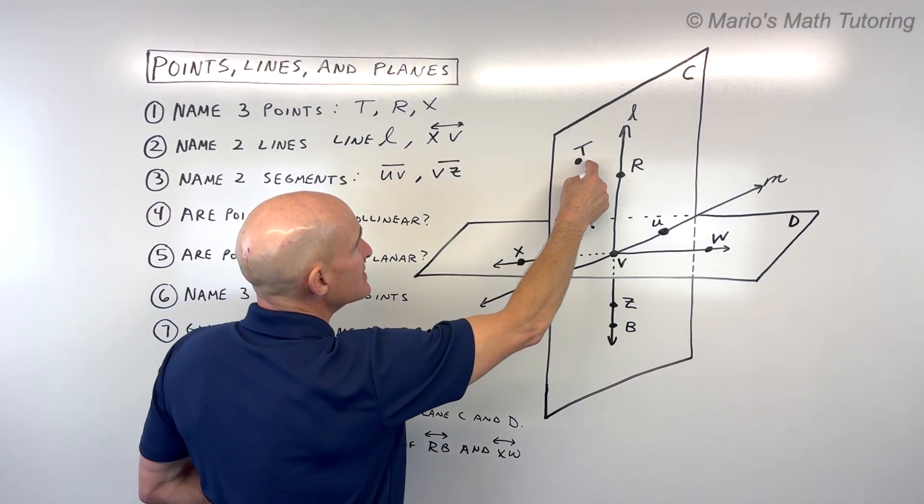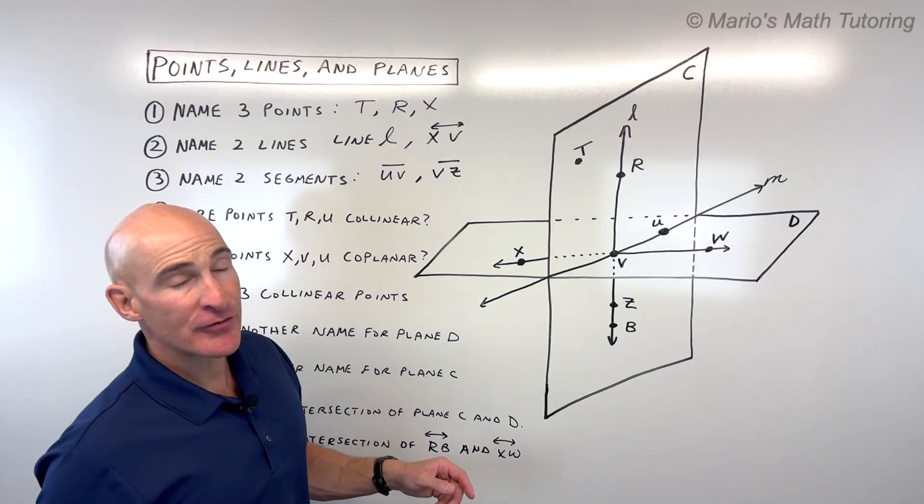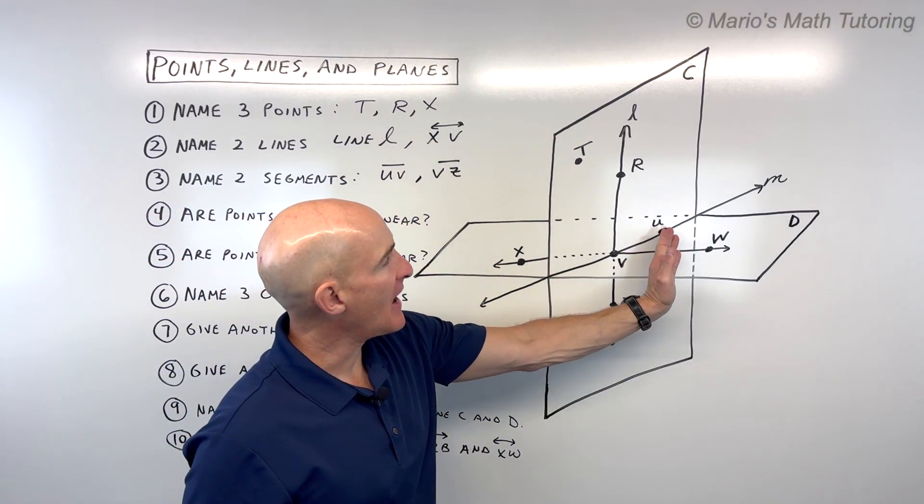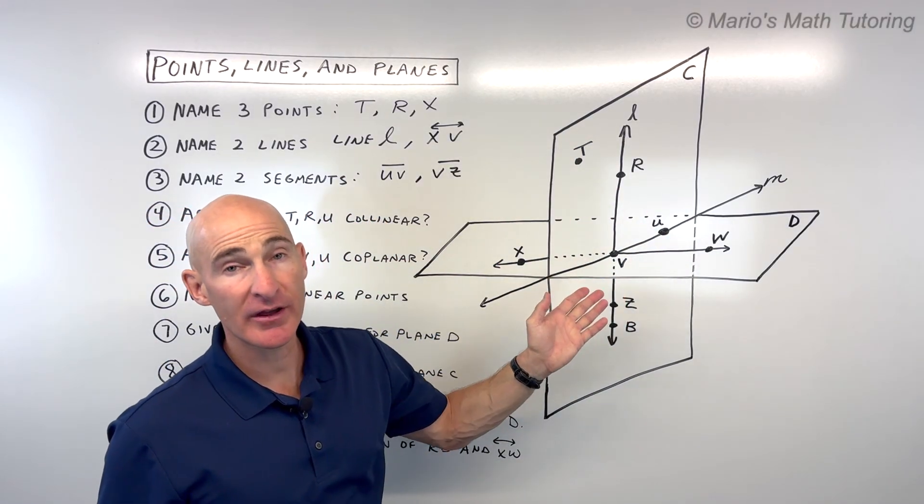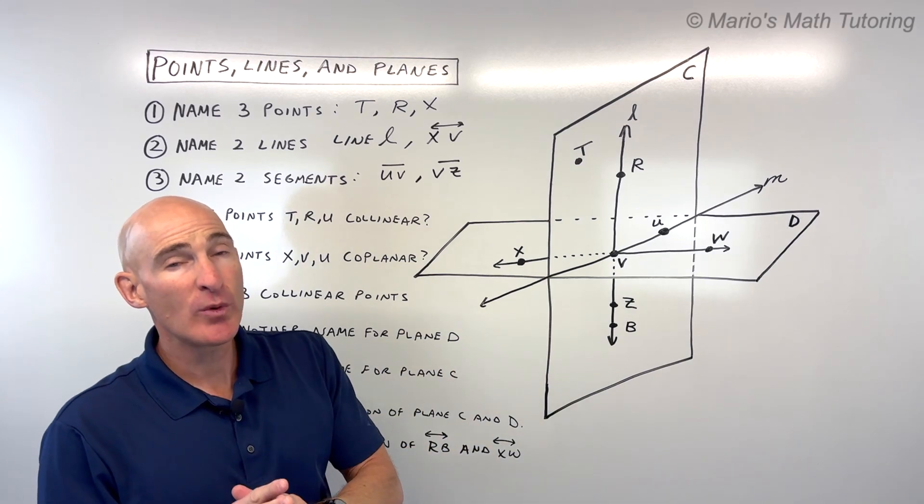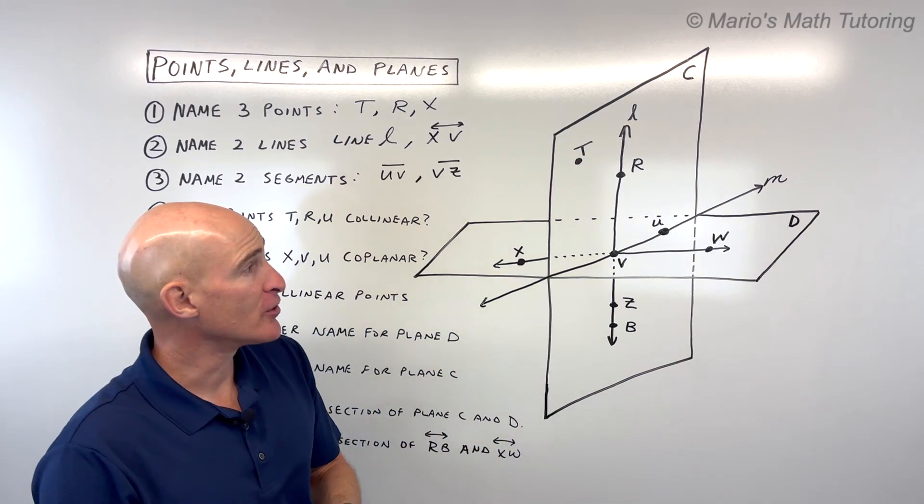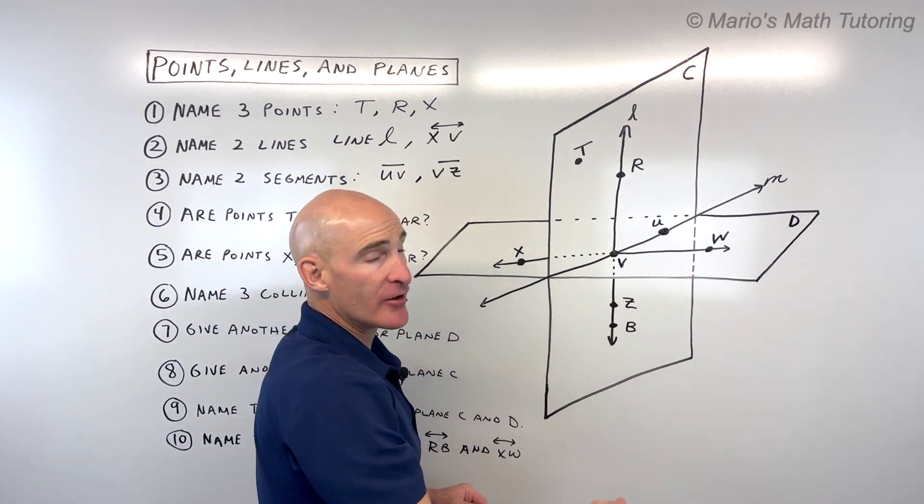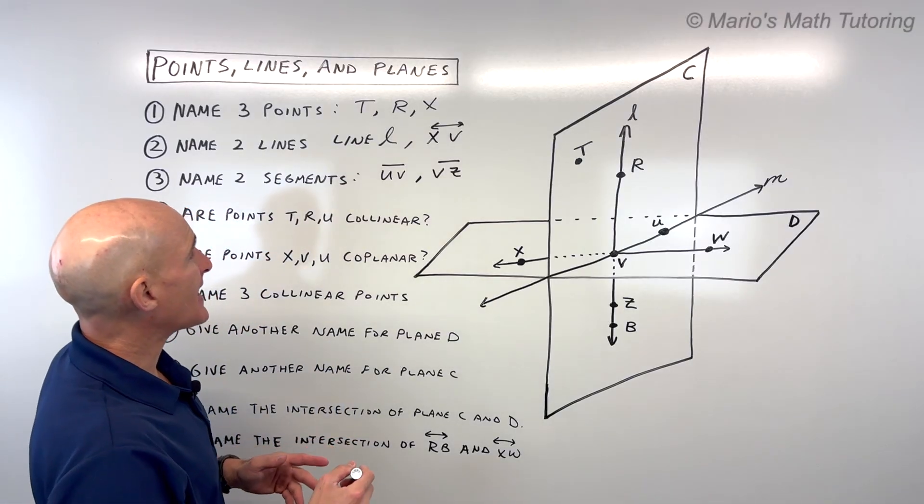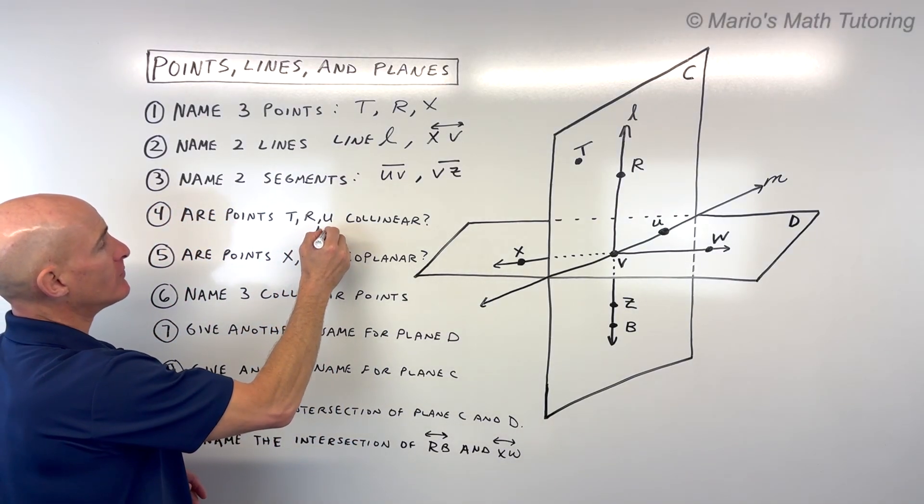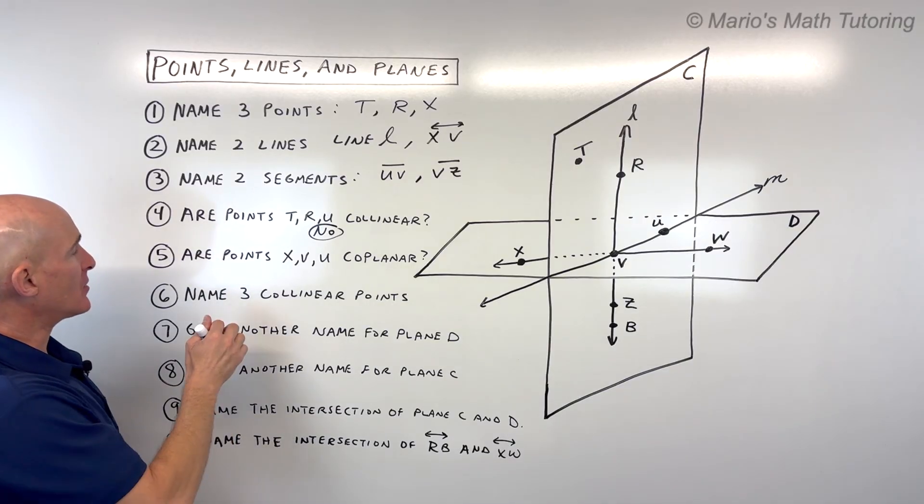T, R, U. At first glance, you might think there could be a line that goes through T, R, and U. They look like they're in a straight line. But the only way that we can say for sure that they're collinear is if there is a line drawn through those points. We can't jump to that conclusion. So I'm going to say no for this one.